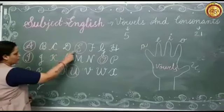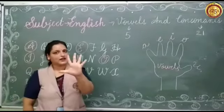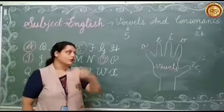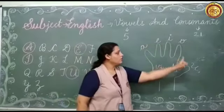1, 2, 3, 4, 5 and 5 are vowels. Look at the board. A, E, I, O, U.